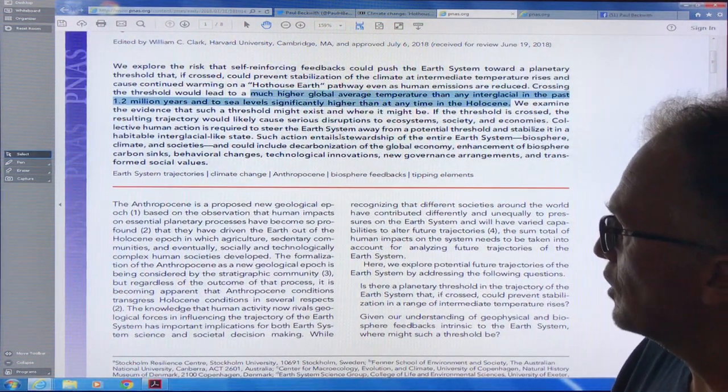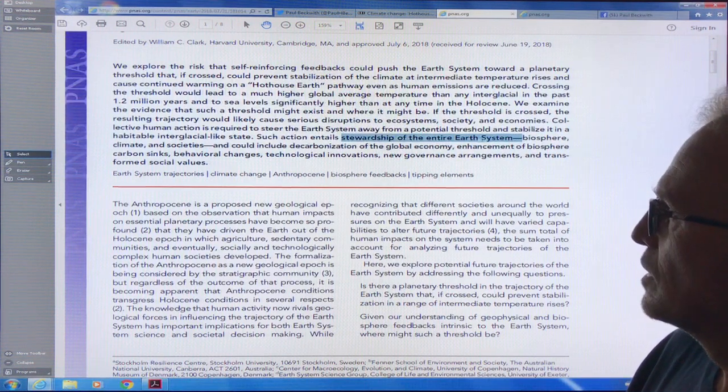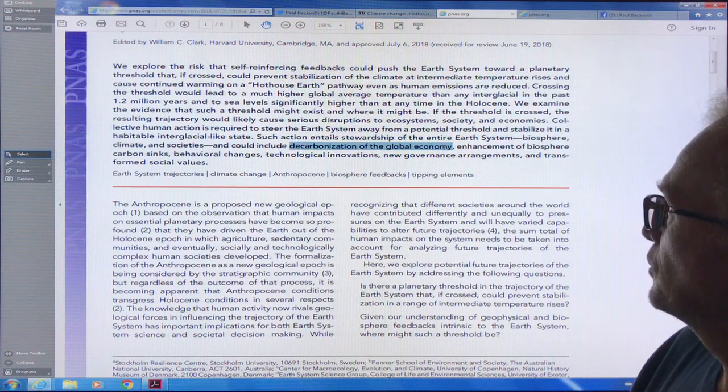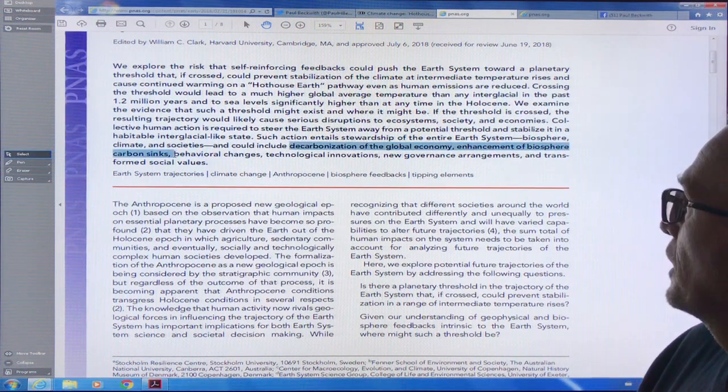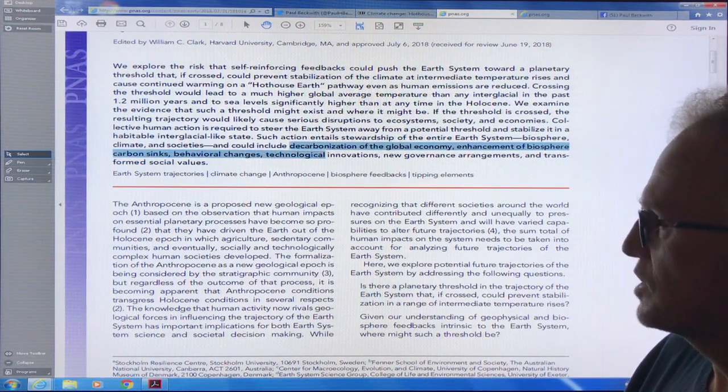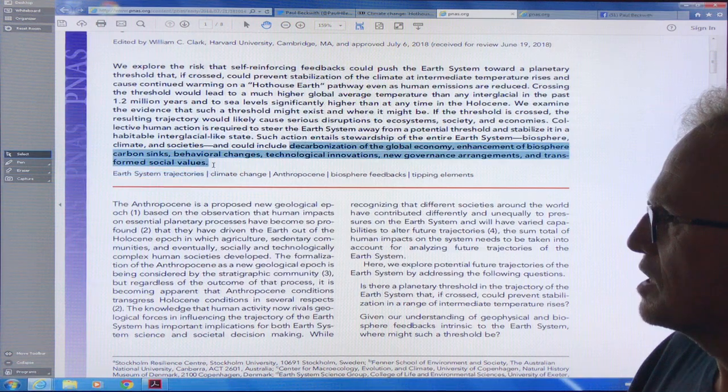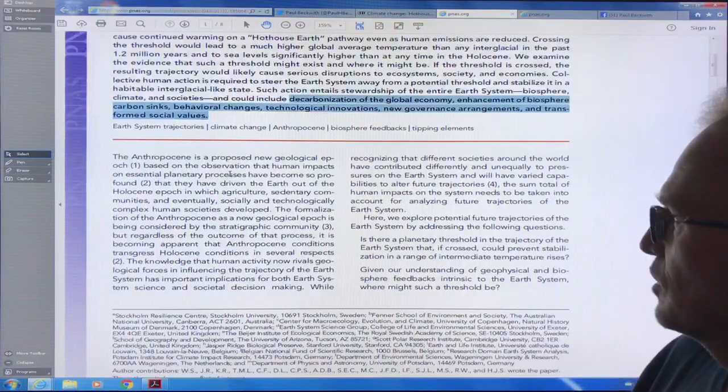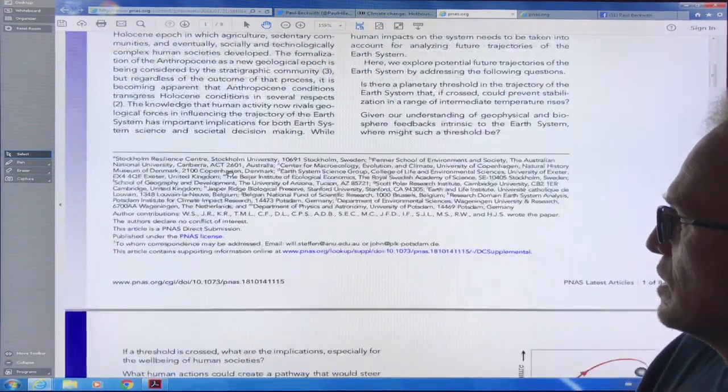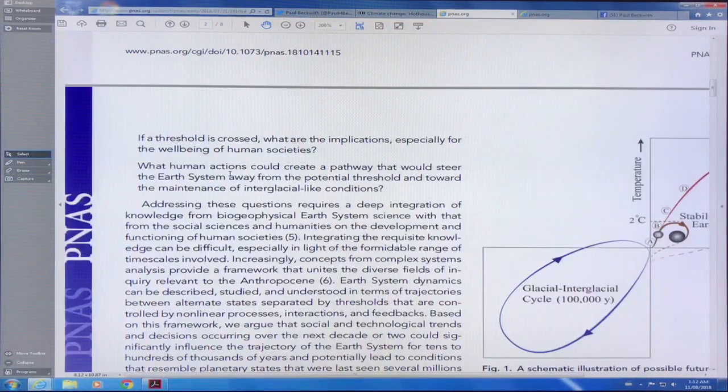If we cross this threshold, we get a much higher global average temperature than any interglacial in the past 1.2 million years, sea level significantly higher than at any time in the Holocene. The paper talks about things we can do - we need stewardship of the entire Earth system. Decarbonization of the global economy is only one of those. We need to enhance the biosphere carbon sinks, behavioral changes, technological innovations, better ways of governing.